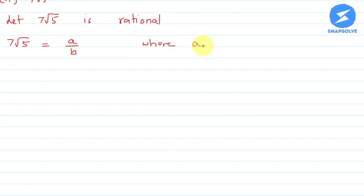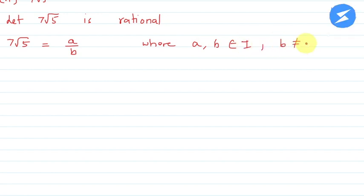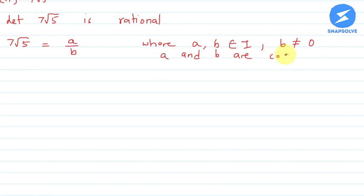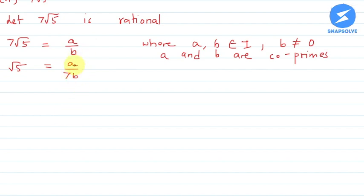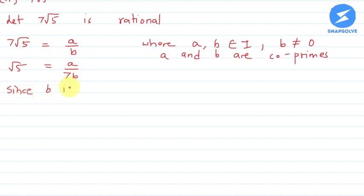Where a and b belong to integers, b is not equal to 0, and a and b are also co-primes. So from this we can express root 5 is equal to a upon 7b. Now we know that a and b are both integers, so 7 into b is also an integer.